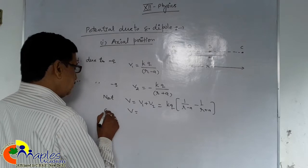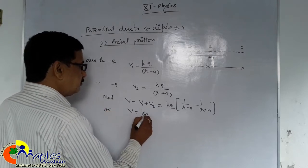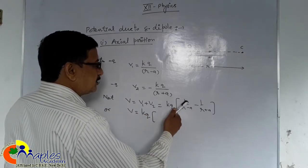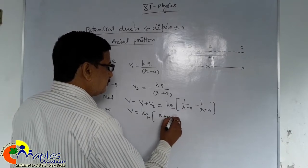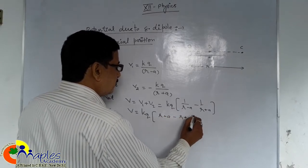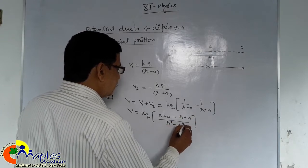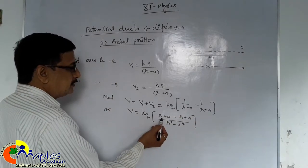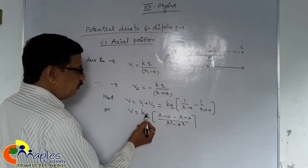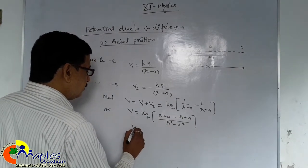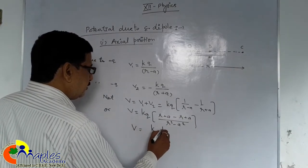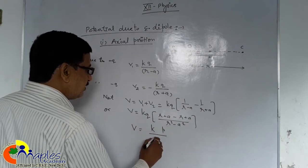V equals KQ, R plus a minus R minus a upon R minus a into R plus a, R square minus a square. R is cancelled. So it is 2a. 2a into Q is equal to P. So V is equal to KP upon R square minus a square.